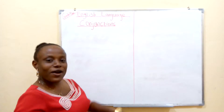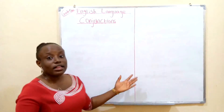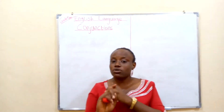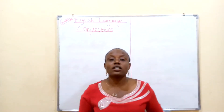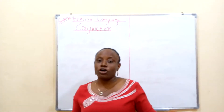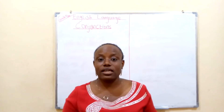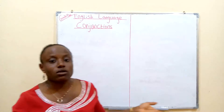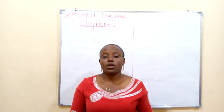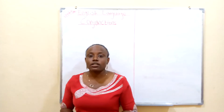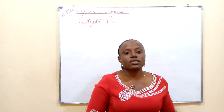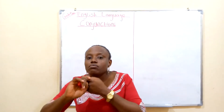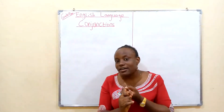I'd like you to repeat after me. Let's go: conjunctions. In our today's class we are going to be looking at the meaning of conjunctions, examples of conjunctions, and we are going to look at conjunctions in sentences. So follow me, because remember I said that learning is fun. Now, what is a conjunction? Conjunctions are words that join two or more words together. We could say that a conjunction is a glue that brings two or more words together in a sentence.